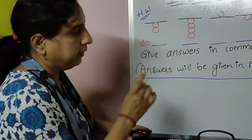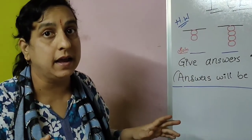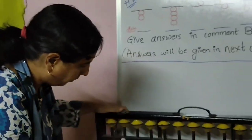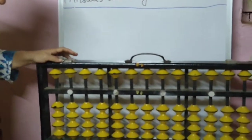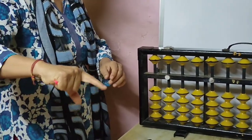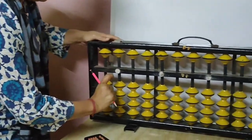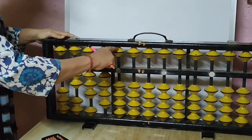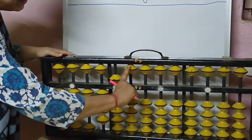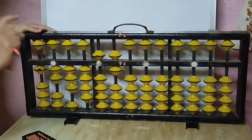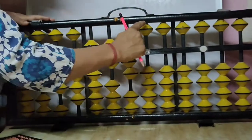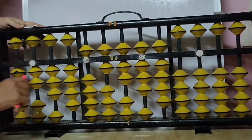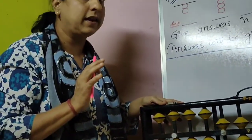Answers will be given in the next class. Now see — catch the pencil by these three fingers. 1, 2, 3, this is 4. 5 — index finger. This is 6, this is 7, this is 8, this is 9 — nine numbers. This is 9.